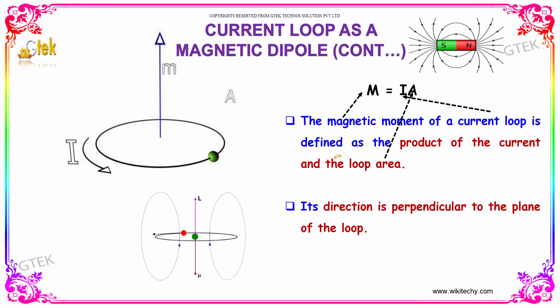The magnetic moment of a current loop is defined as the product of the current and the loop area. Its direction is perpendicular to the plane of the loop.